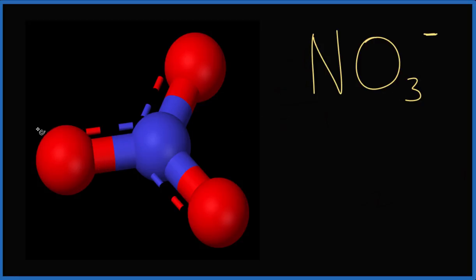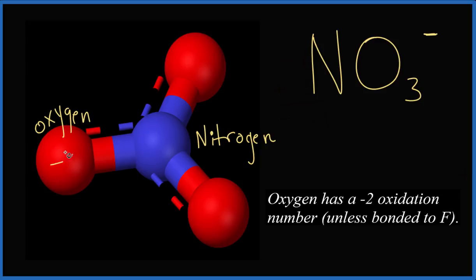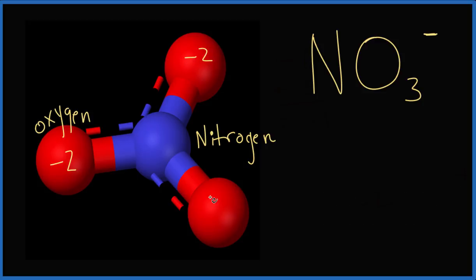We have oxygen here, that's the red, and nitrogen, that's the blue. We know that oxygen will have a minus two charge unless it's bonded to fluorine. So each of these oxygens bonded to the nitrogen will have minus two charges.